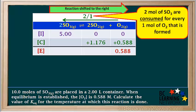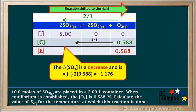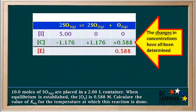Now we consider the reactant SO3. Its coefficient is also 2, so the coefficient ratio of SO3 to O2 is also 2 to 1. Because the reaction shifts to the right and SO3 is a reactant, its concentration will decrease as the system approaches equilibrium. The 2 to 1 ratio means 2 moles of SO3 are consumed for every 1 mole of O2 formed. So the change in concentration of SO3 is negative 1.176. The changes in concentration have now been determined for all three species and recorded in the change row of the table.